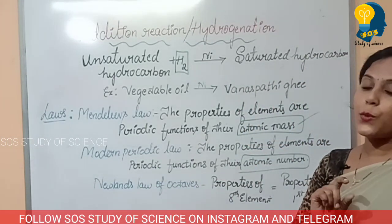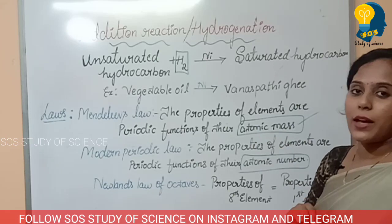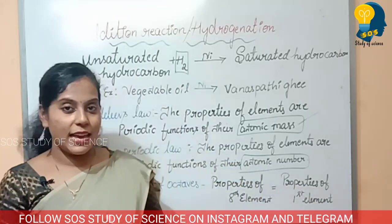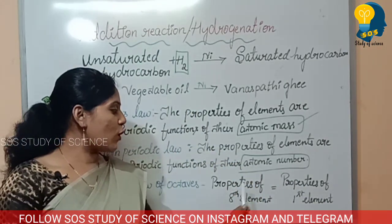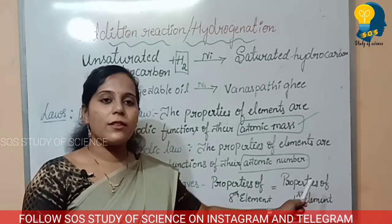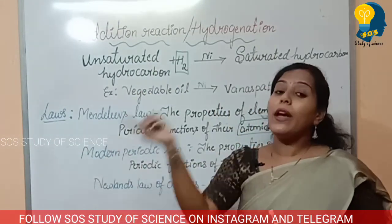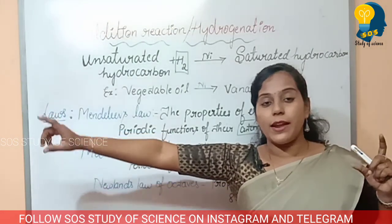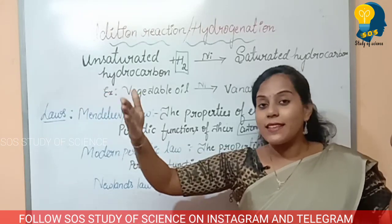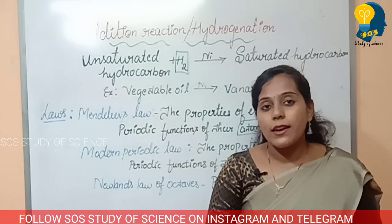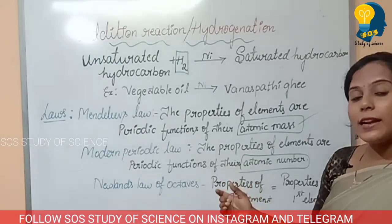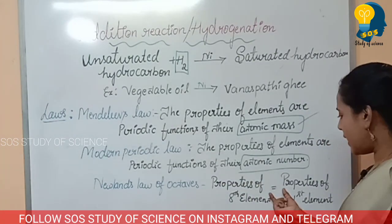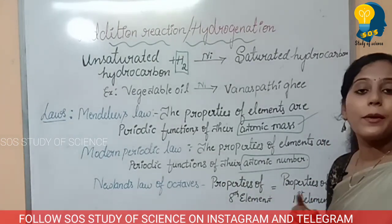There is also Newlands law of octaves and Dobereiner's triads law. For Newlands law of octaves: the properties of the 8th element are equal to the properties of the 1st element. That is, the first element and the 8th element have the same properties — we call it Newlands law of octaves.